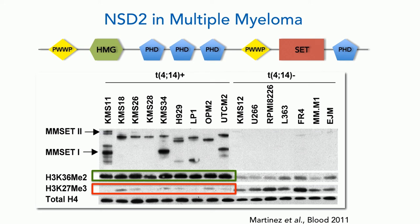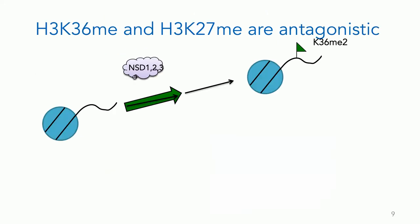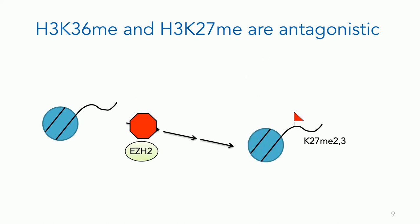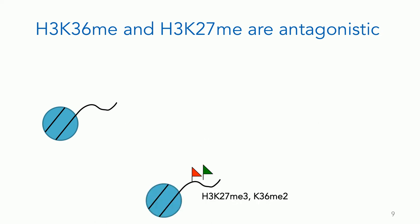Notably, in every cell line with this overexpression, we see a striking change in chromatin modification: histone H3K36 dimethylation is increased and K27 trimethylation is decreased. These two marks are actually mutually exclusive — there is no histone tail carrying both K27 trimethyl and K36 dimethyl, as confirmed by mass spectrometry. The systems are set up to oppose each other; it's a switch.